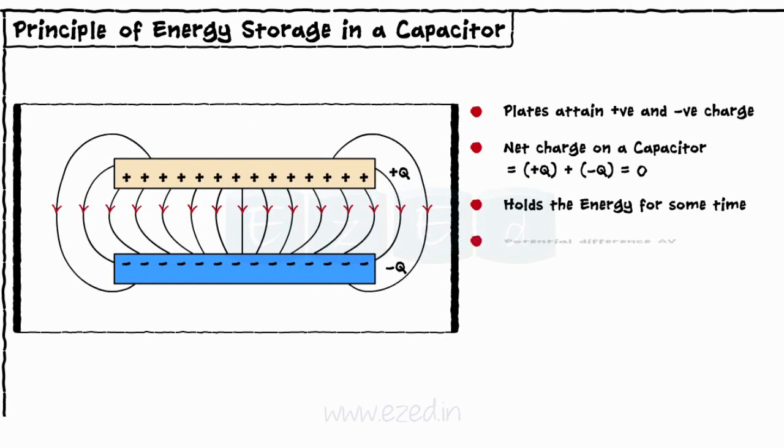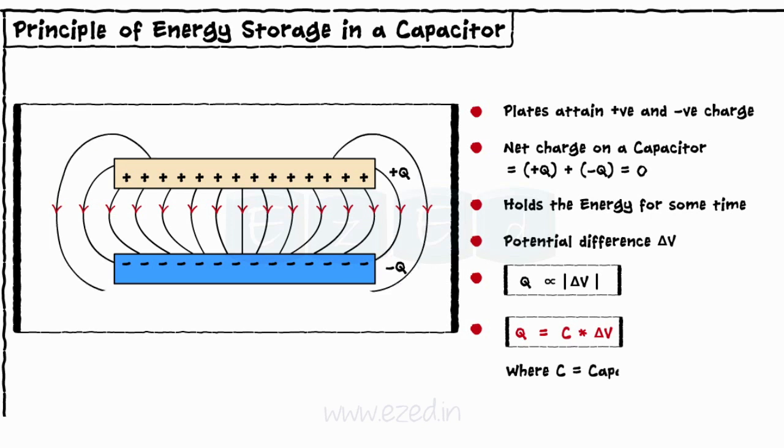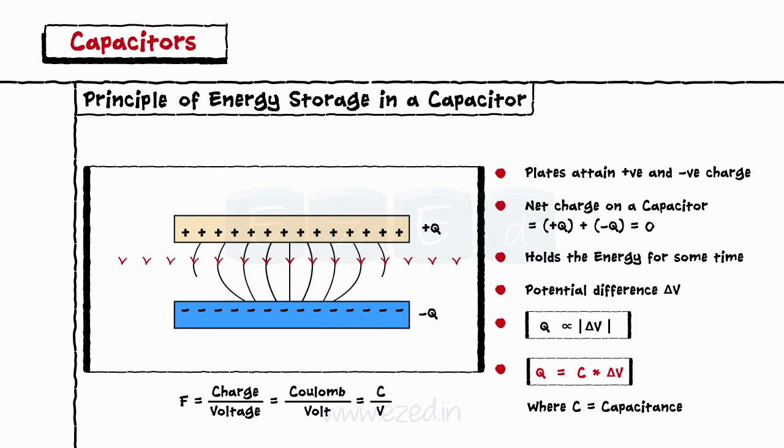These different charges create the potential difference delta V between two plates. The amount of charge Q stored in a capacitor is linearly proportional to the potential difference between the plates. Thus we may write Q equals C into delta V, where C is a positive proportionality constant called as capacitance, the unit of this capacitance is Farad given as capital F.